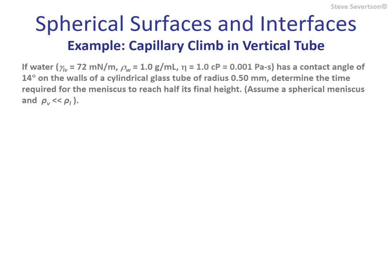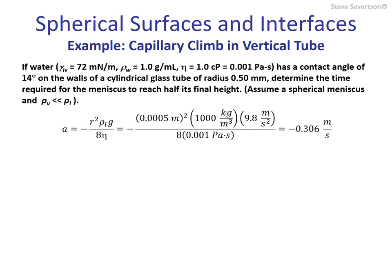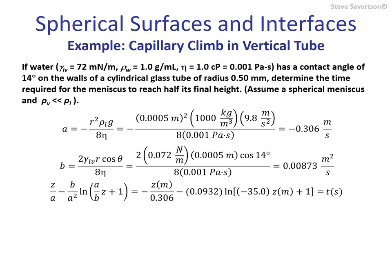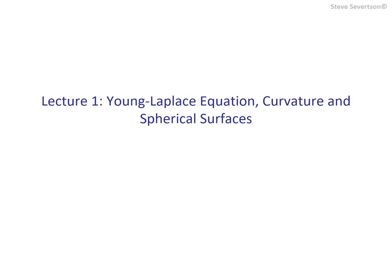As an example, we are asked to determine the time required for the meniscus to climb to half its equilibrium height. All the information required to calculate values for the constants A and B are provided, and it is assumed that the vapor density can be neglected relative to the density of the liquid. The equilibrium height of the column equals negative B over A; this value is multiplied by one half and entered into the equation along with the values for the constants to provide an estimate for the time required, which is quite small. This completes Lecture 1 of our chapter on capillarity.